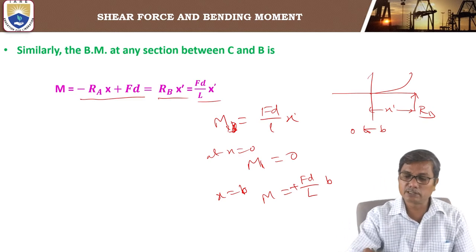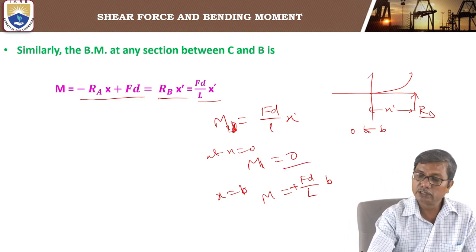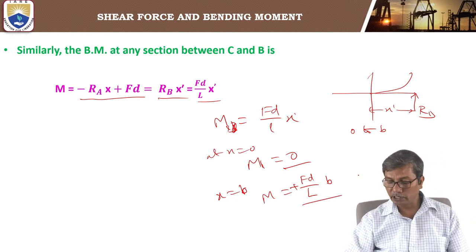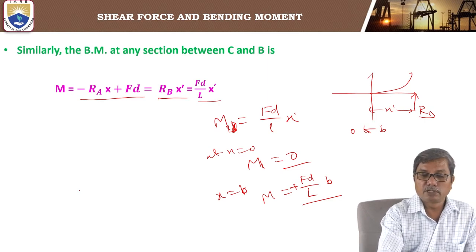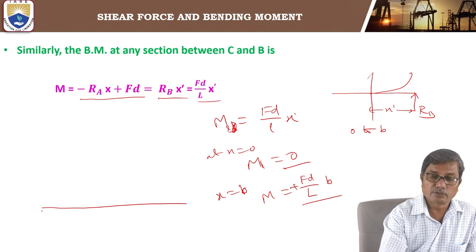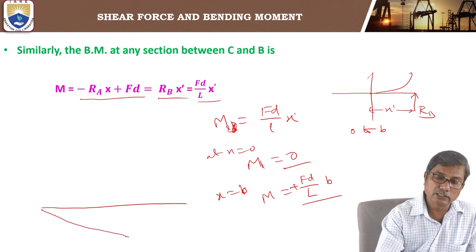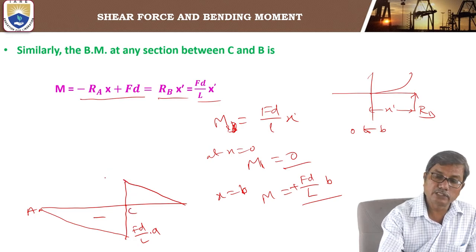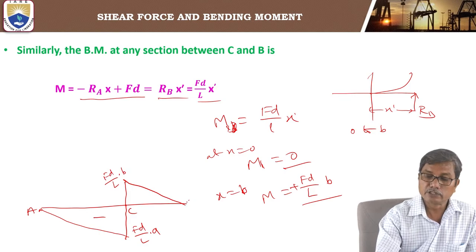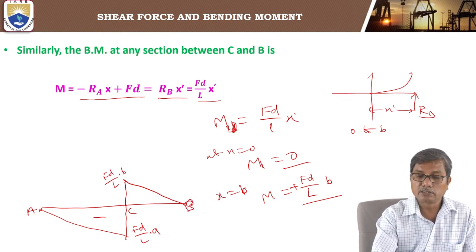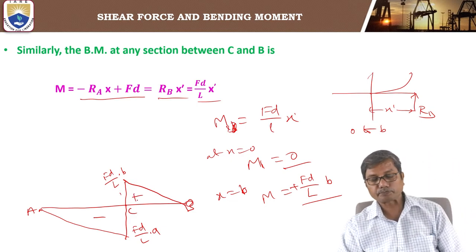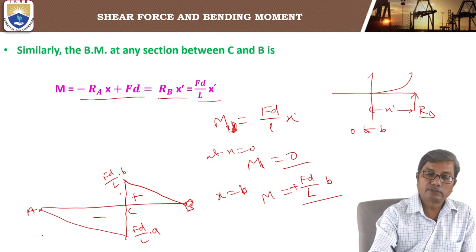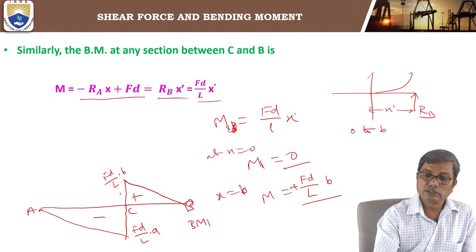The bending moment increases linearly from 0 at B to plus Fd by L into b at C. From A to C it varies linearly from 0 to minus FdA by L (negative), and from B to C it varies from 0 to plus FdB by L (positive). The bending moment diagram due to the couple will be of this form.